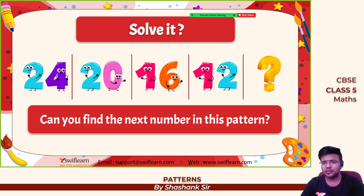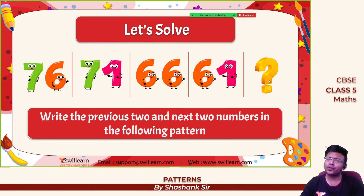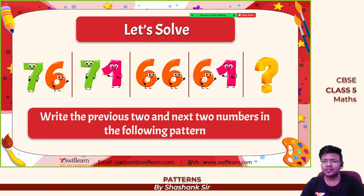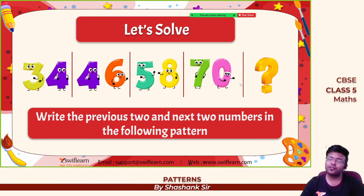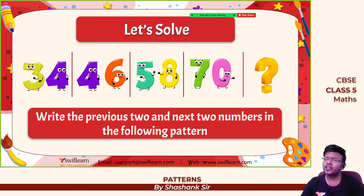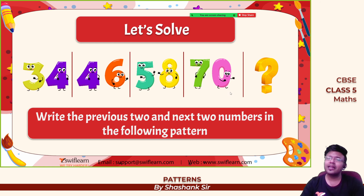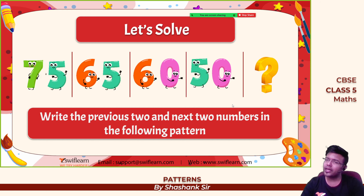Try this yourself: 76, 71, 66, 61 — we are reducing by 5, so 61 minus 5 will be 56. Next: 34, 46, 58, 70 — check the difference: it is 12 each time, so we are adding 12. 70 plus 12 is 82, so 82 will be the next number.